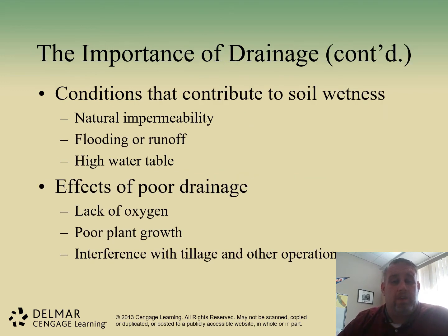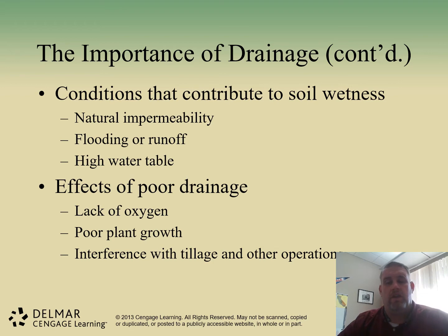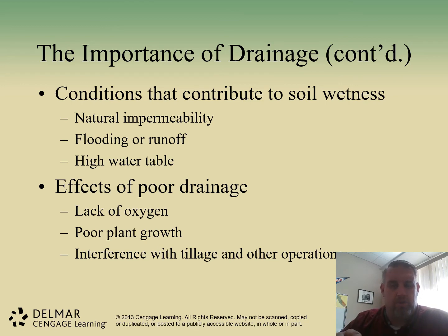What are things that contribute to soil wetness? Natural impermeability — clay particles or rock formations that don't allow water to flow through. If you have excess flooding or water runoff greater than the percolation rate of the soil, you will have excess water or a high water table. This can be found in areas with rivers, lakes, or closer to sea level, where the water table stays high enough that additional water cannot flow away.